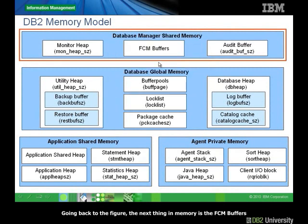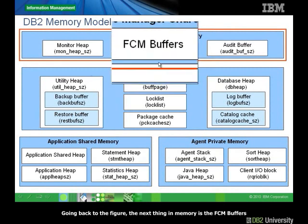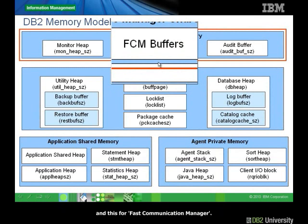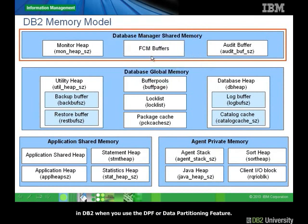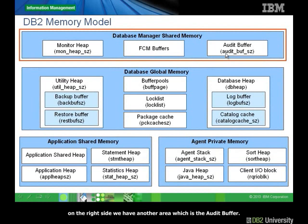Going back to the figure, the next area in memory is the FCM buffers, which stands for Fast Communication Manager. These are buffers used for communication between different partitions in DB2 when you use the DPF, or database partitioning feature. They are also used for communication between different agents when intra-parallel is turned on. On the right side, there is another memory area called the audit buffer, which is used when you use the DB2 audit command.